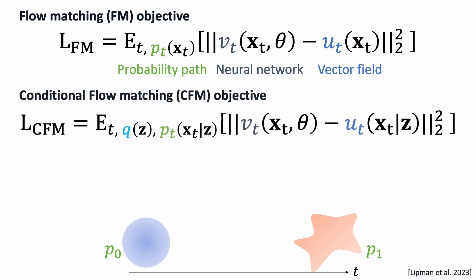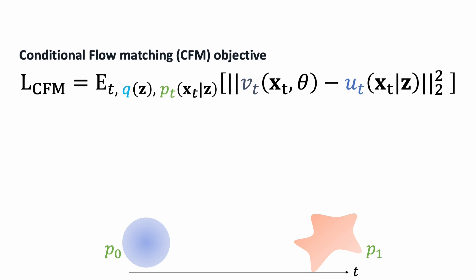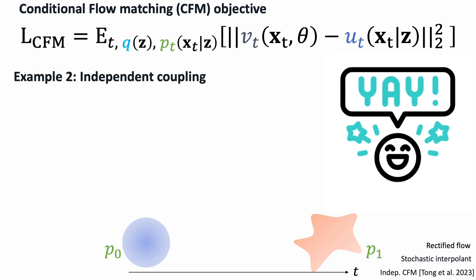We can now define the conditional flow matching objective. The conditional probability, the conditional probability path, and the conditional vector field are all easy to compute. Surprisingly, the gradients of the conditional flow matching objective are the same as the unconditional one. This provides scalable ways of training continuous normalizing flows.